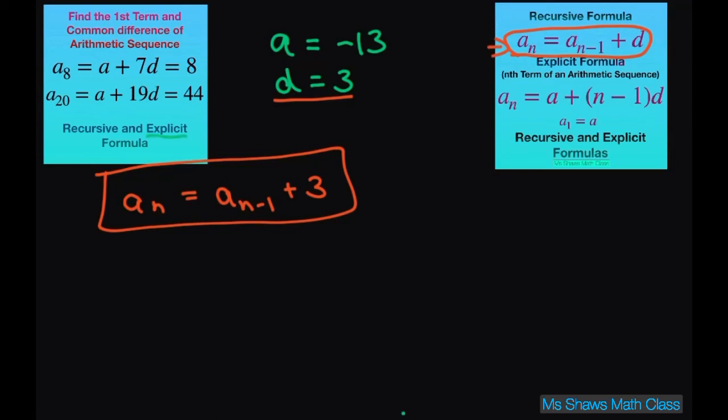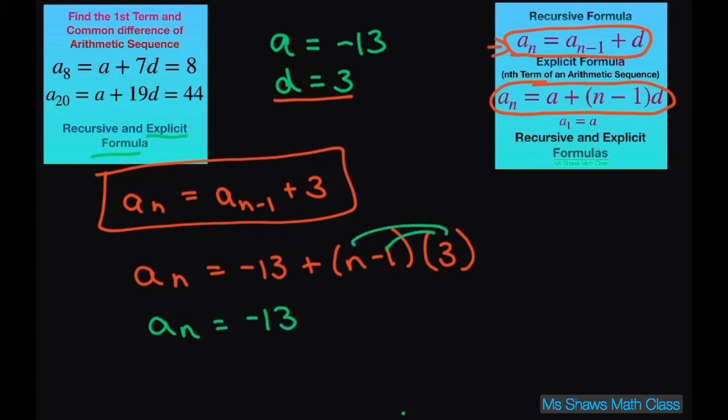The explicit formula or the nth term, little harder. So you just write a sub n equals your first term plus, and I'm using this formula here, n minus 1 times d. So just write that out. You get a sub n equals negative 13 plus n minus 1 times 3. Distribute here, so that's going to give you plus 3n minus 3. And this gives you our explicit formula, our nth term is negative 16 plus 3n.